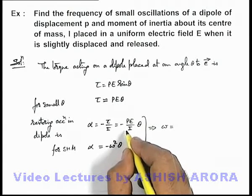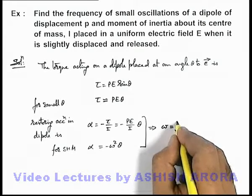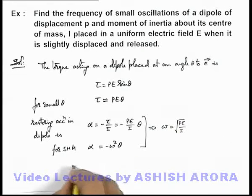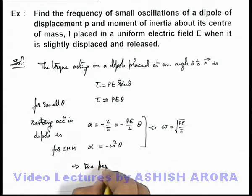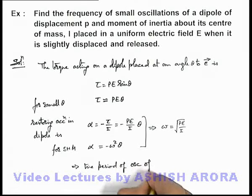The SHM for the dipole about its stable equilibrium is given by ω = √(PE/I). This implies we can write down the time period of oscillations of the dipole as T = 2π/ω, which is 2π√(I/PE).